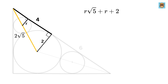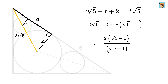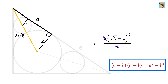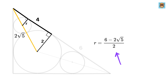We have already calculated this length as 2√5. Taking 2 to the other side: 2√5 − 2 = r(√5 + 1). Thus r = 2(√5 − 1) / (√5 + 1). Multiplying and dividing by the conjugate (√5 − 1) and using the (a−b)(a+b) formula, the denominator becomes 5 − 1 = 4. Cancel 2 with 4. The numerator becomes (√5 − 1)² = 5 + 1 − 2√5 = 6 − 2√5. Dividing by 2 gives the radius as 3 − √5.